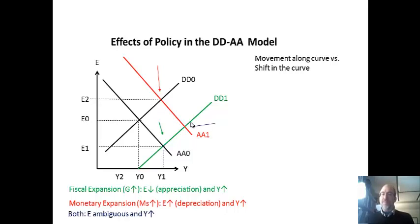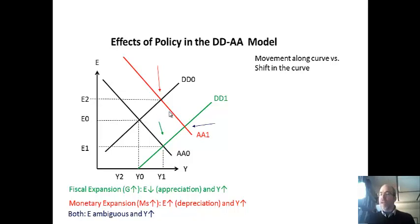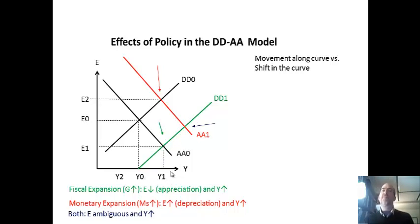If you look at both policies together, the effect on E is ambiguous — they could cancel each other out, but they don't have to. One could be bigger than the other, leading to a net appreciation or depreciation. But the increase in output is unambiguous: with two expansions together, it's going to be a much larger expansion in the economy.